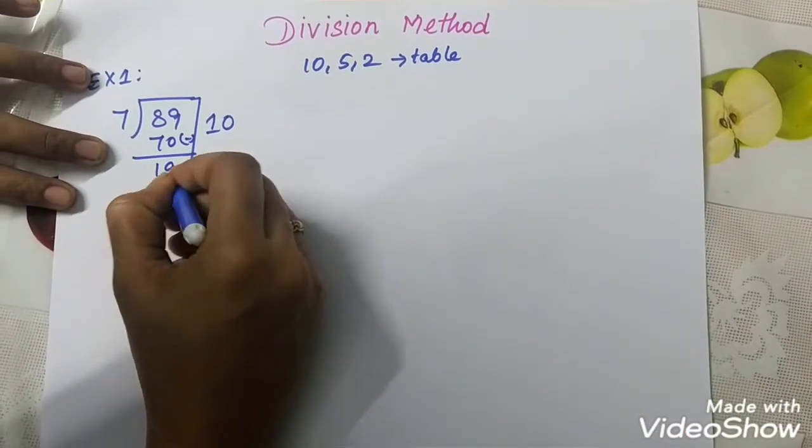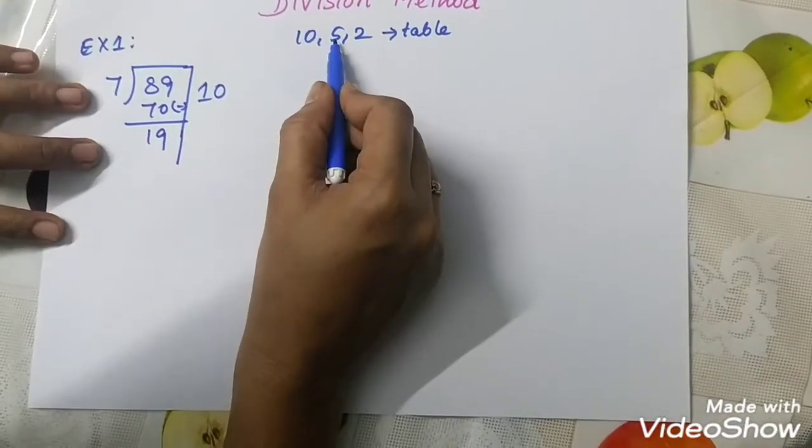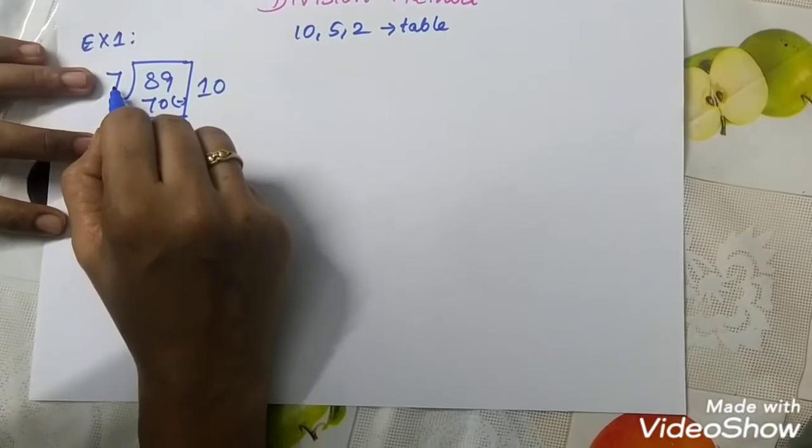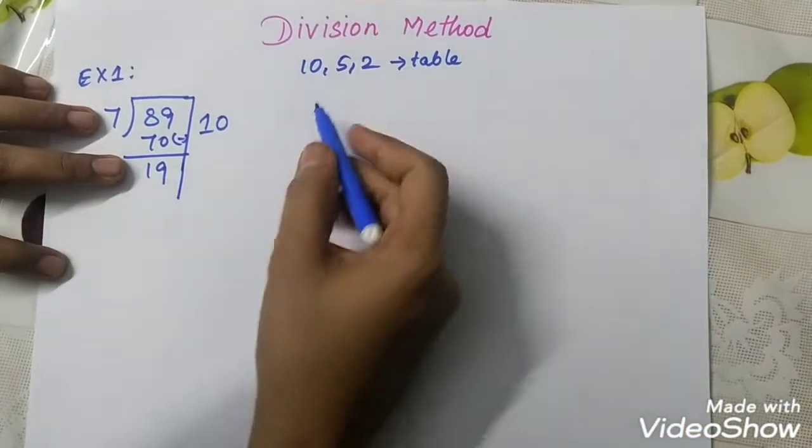You can go and subtract. 19, remaining value is 19. You can take 5, 5, 7's are 35. 35 is more than 90. So, don't take 5.